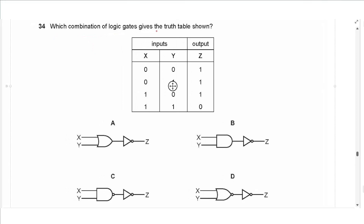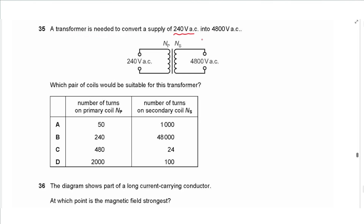Question 34 is about logic gates, which you can skip for the new syllabus. Which combination of logic gates gives the truth table shown? We have: 0 and 0 gives 1, 0 and 1 gives 1, 1 and 0 gives 1, 1 and 1 gives 0 — that is the opposite of an AND gate. So we have an AND gate reversed by a NOT gate, making the answer B.